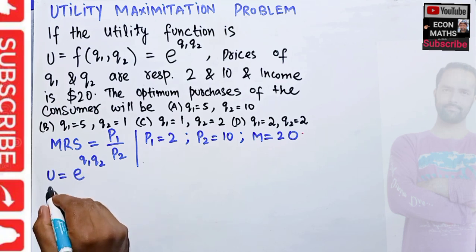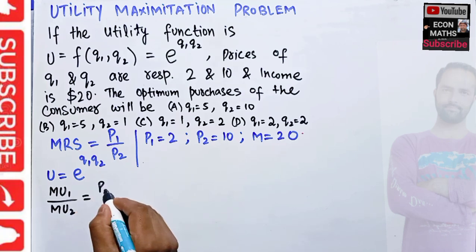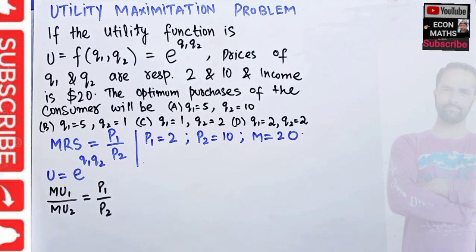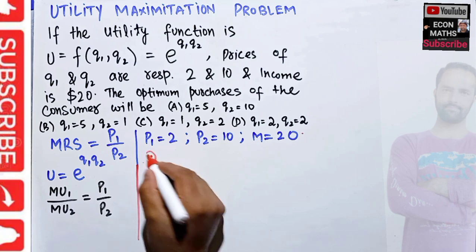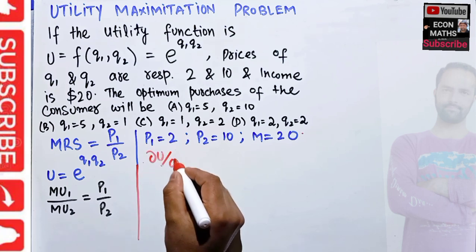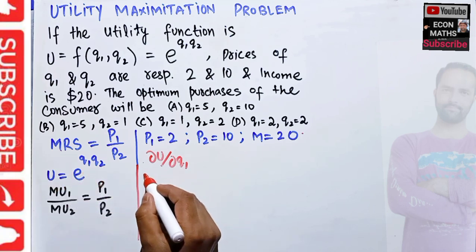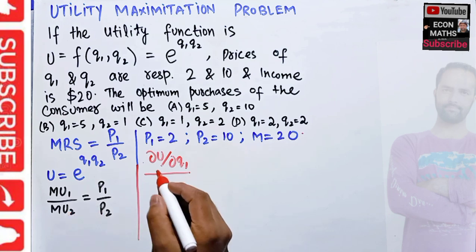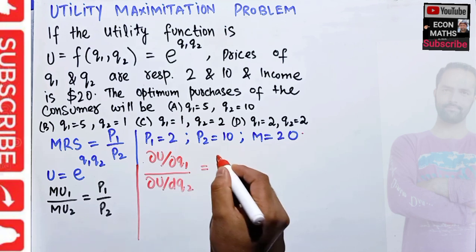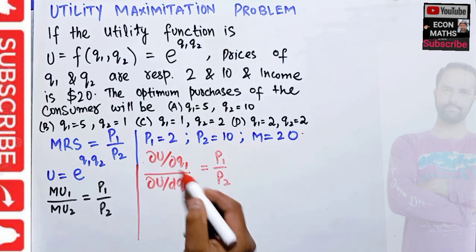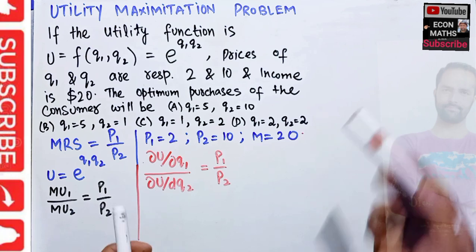MRS is simply equal to the marginal utility of good one upon the marginal utility of good two, which should equal the ratio of prices p1 upon p2. MU1 is the partial derivative of the utility function with respect to q1, and MU2 is the partial derivative with respect to q2. This MRS denotes the slope of the indifference curve, and p1/p2 denotes the slope of the budget line.